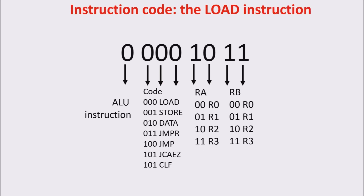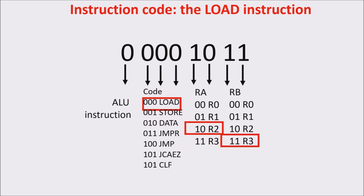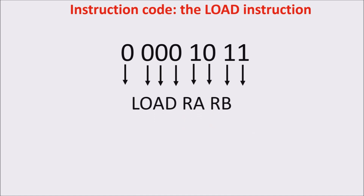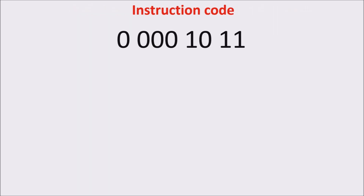The first NOT ALU instruction we see is the load instruction, which has OP code 0000. Load instruction is used to load a byte from RAM to a register. In this case, the instruction states load R3 from RAM being addressed in R2, or more generally, load RB from RAM being addressed in RA.